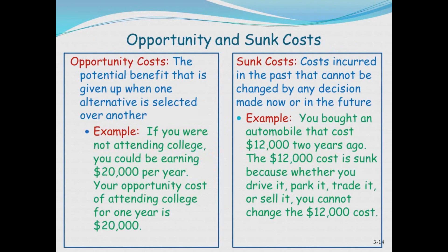Opportunity costs are the potential benefit given up when one alternative is selected over another. For example, by coming to college, if you could have earned $20,000 a year otherwise, that is your opportunity cost of attending college. Sunk costs are costs incurred in the past — for example, if you bought a car two years ago for $12,000, that $12,000 is sunk. Whether you drive it, park it, or sell it, you've already spent that money, so you take it out of your forward-looking analysis — unless you could sell the car, in which case it's not fully sunk.